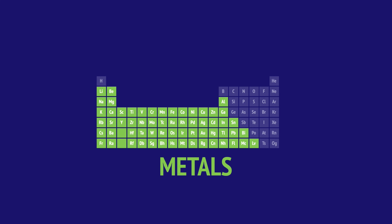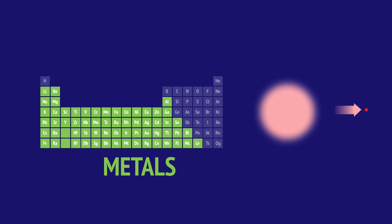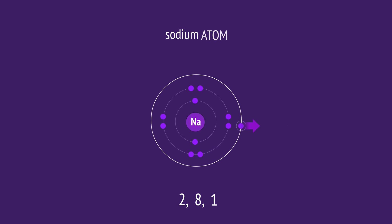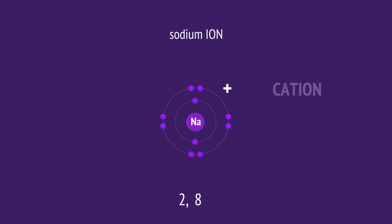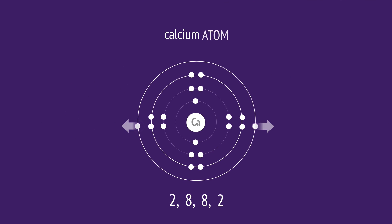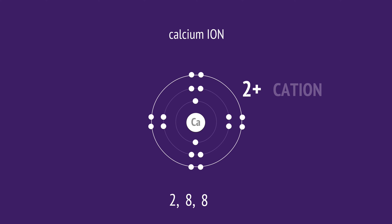Metals have outer shells that are mostly empty. Metals achieve full outer shells by losing their outer electrons. In doing so, they form positive ions, or cations. For example, sodium in group 1 has one valence electron. A sodium atom will readily lose this outer electron to form a sodium ion with a 1+ charge. Calcium in group 2 has two valence electrons. A calcium atom will readily lose these two electrons to form a calcium ion with a 2+ charge.